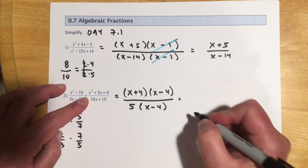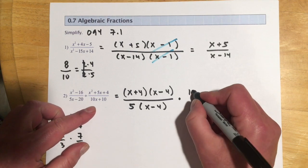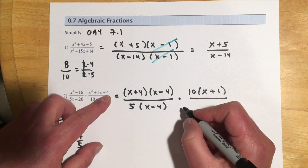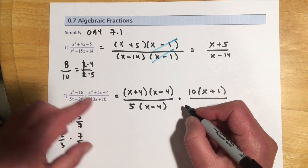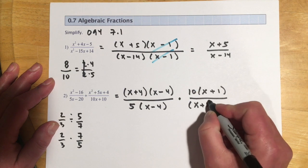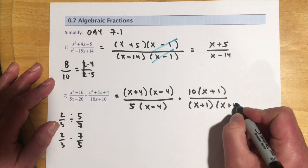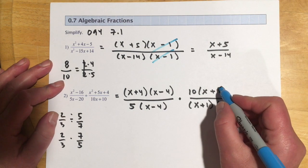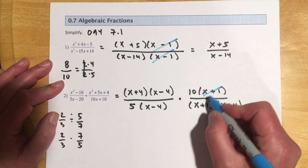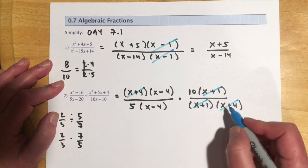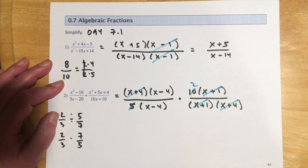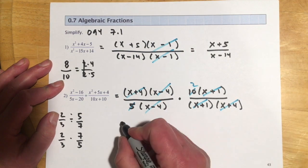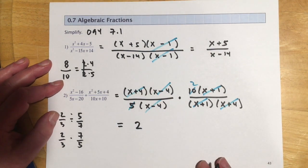Since it's division, we rewrite as multiplication. The 10x+10 factors as 10(x+1), and the remaining quadratic factors into (x+1)(x+4) using two numbers that multiply to 4 and add to 5. Then we cancel: (x+1) cancels, (x+4) cancels, (x-4) cancels, and 5 goes into 10 twice. The only thing that survives is 2, so the whole expression reduces to 2.